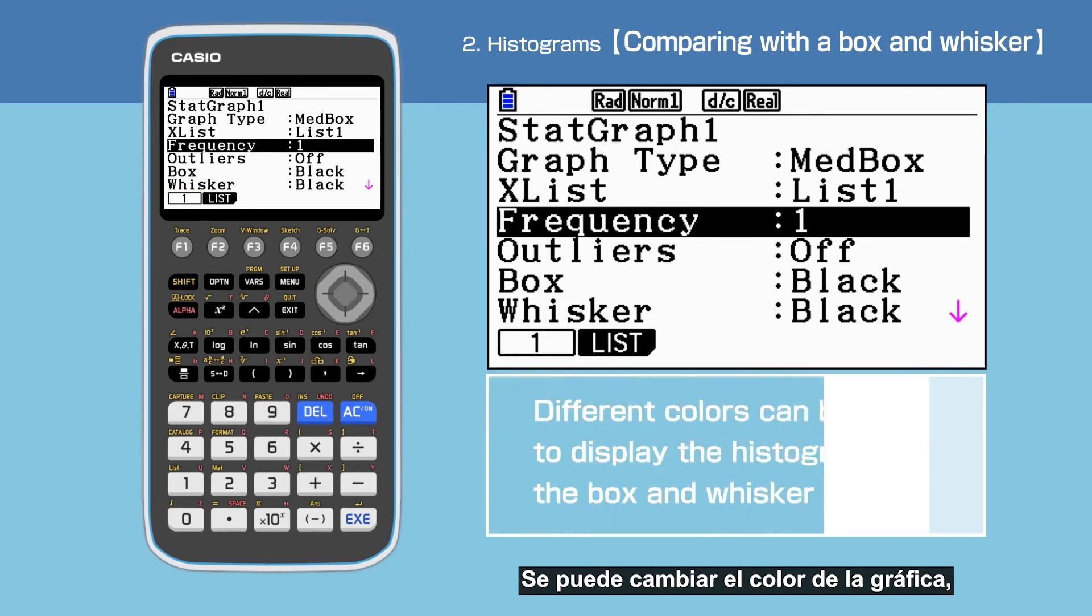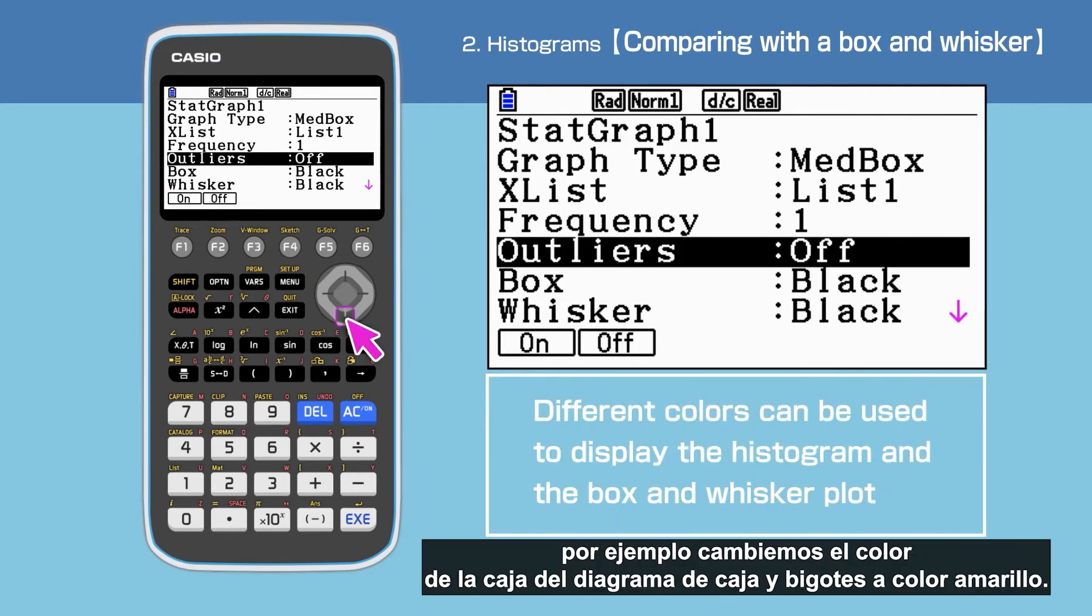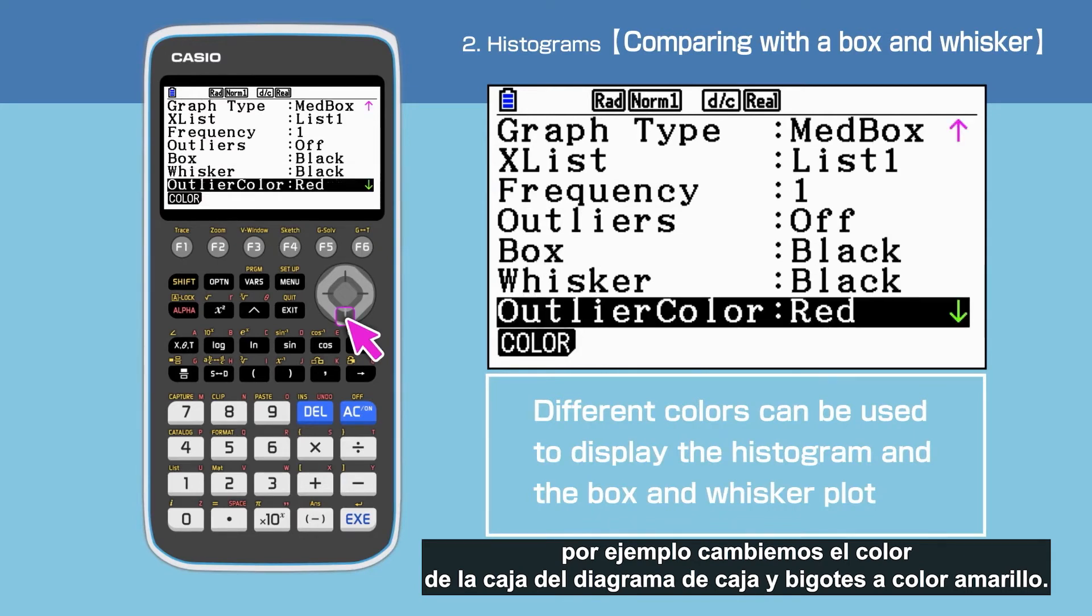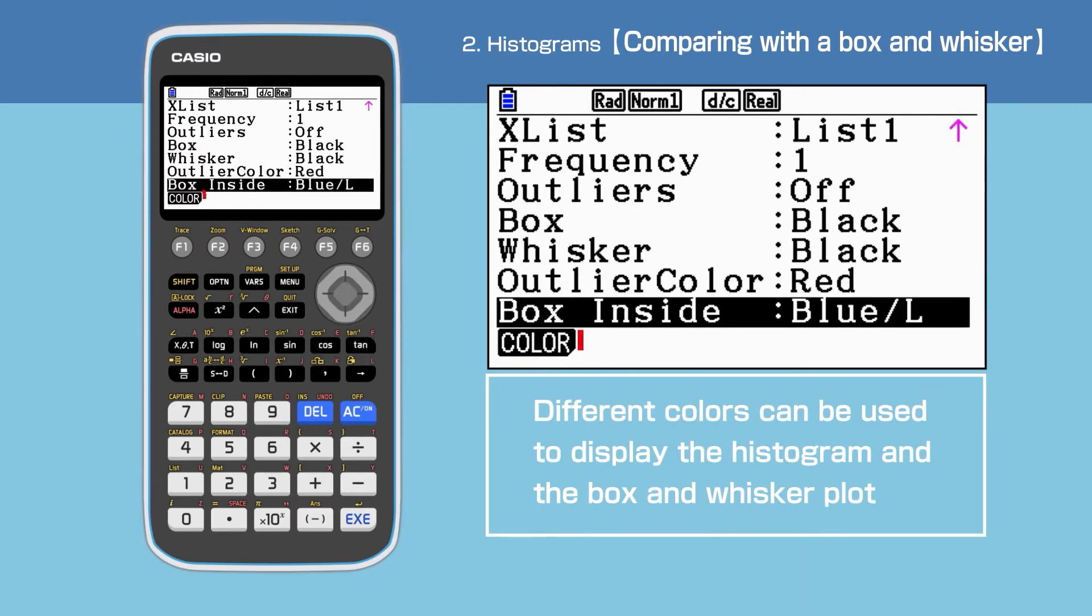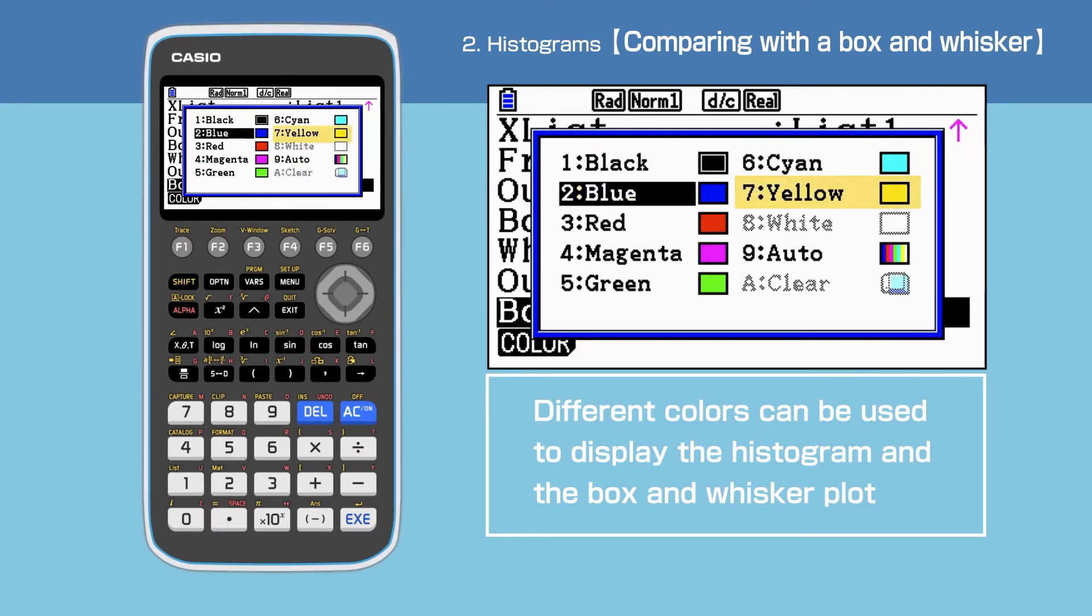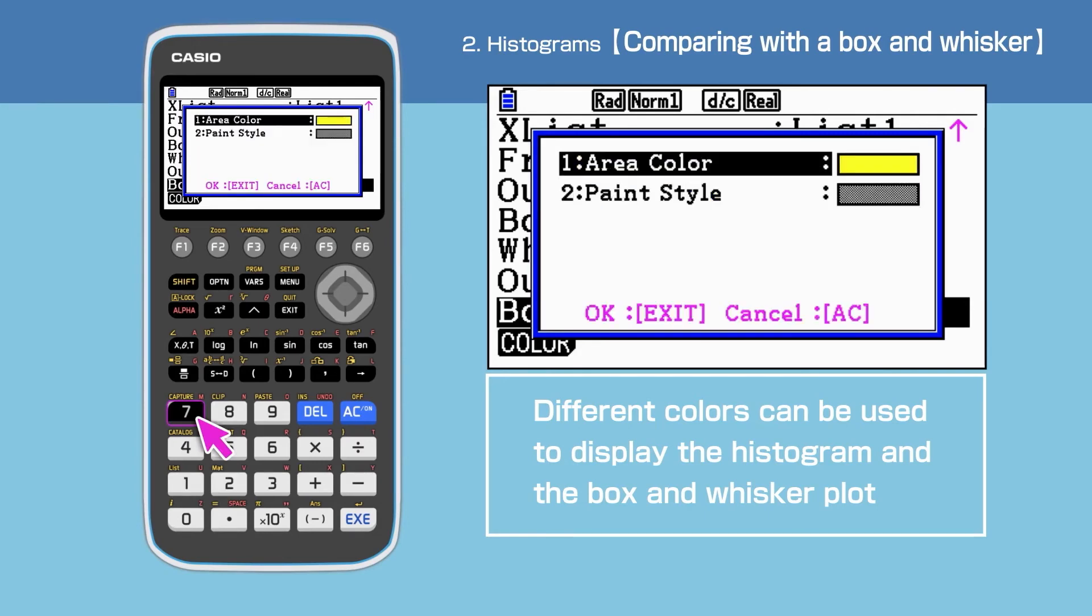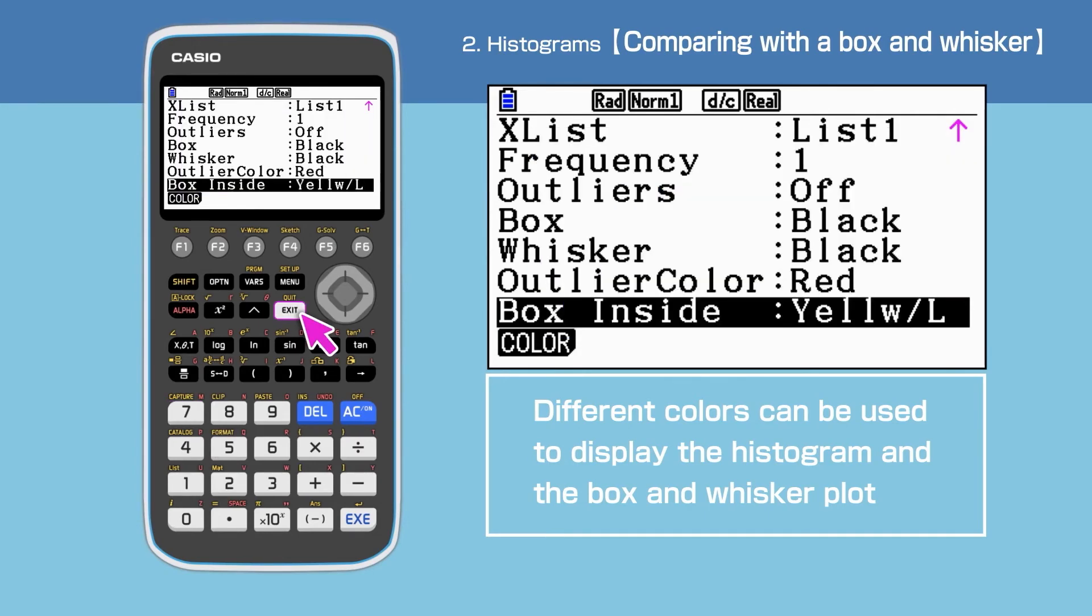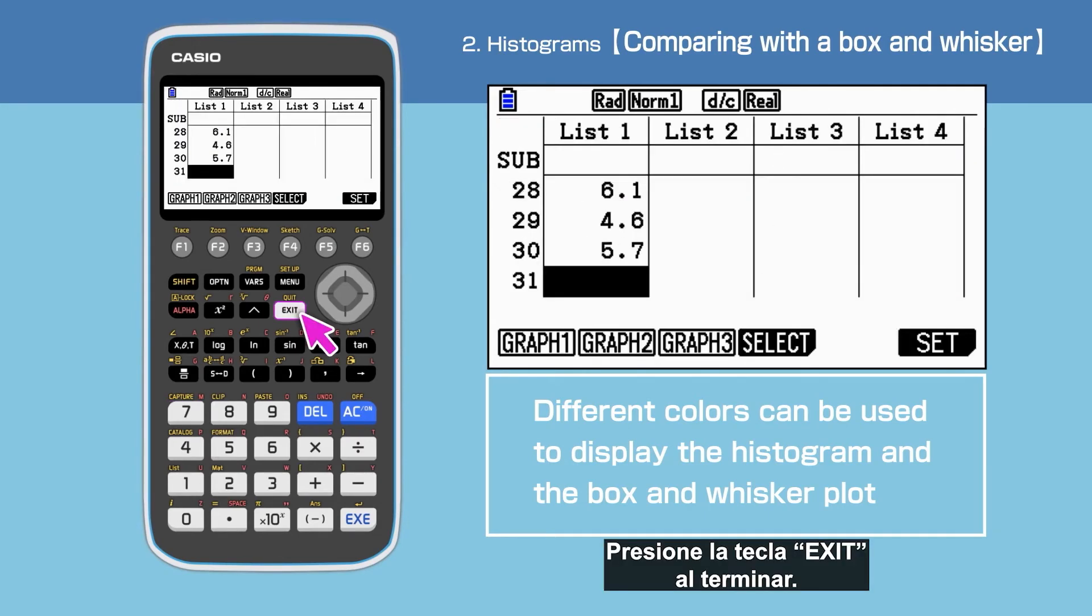We can change the color of the plot. For instance, let's change the color inside the box to yellow. Press Exit when finished.